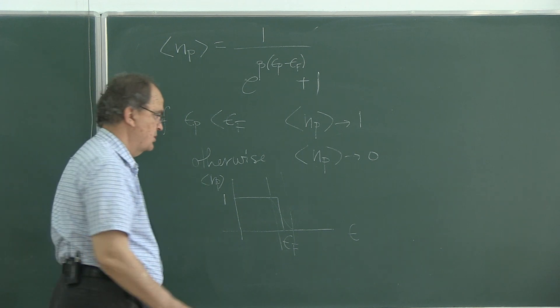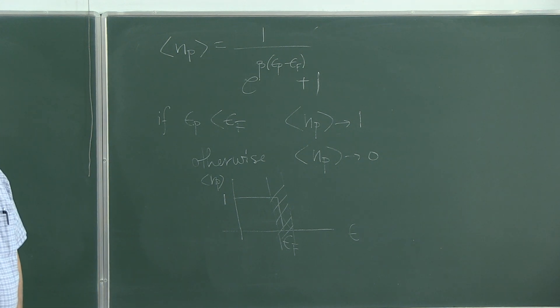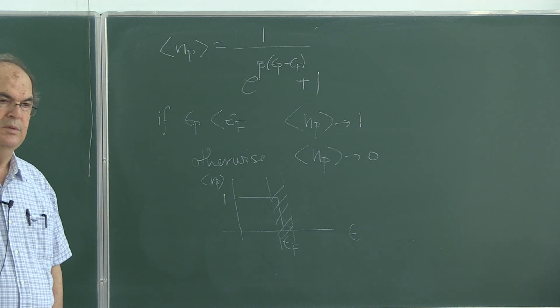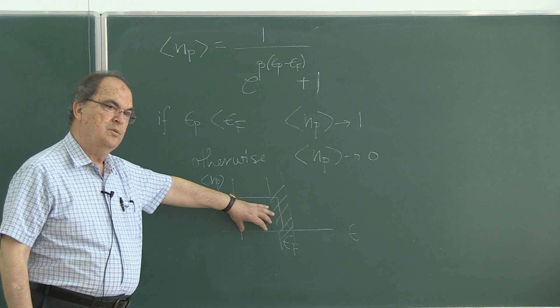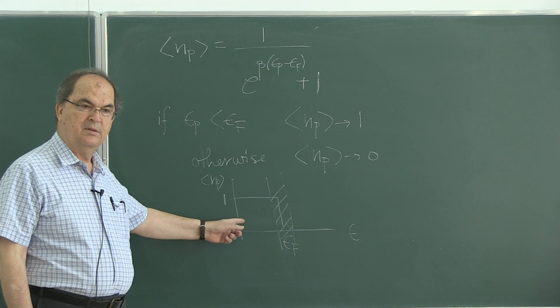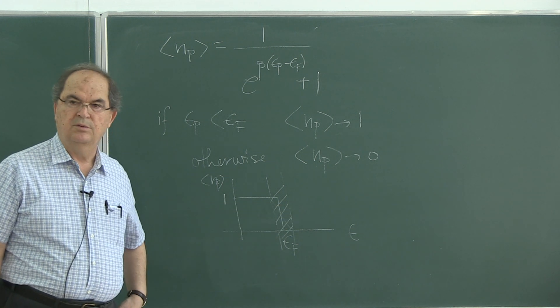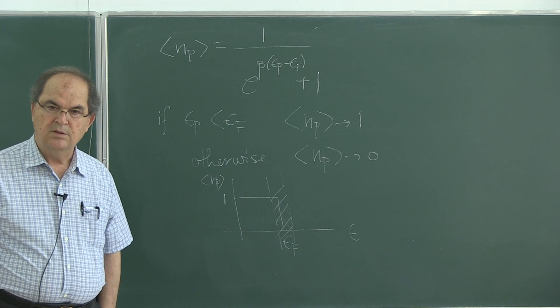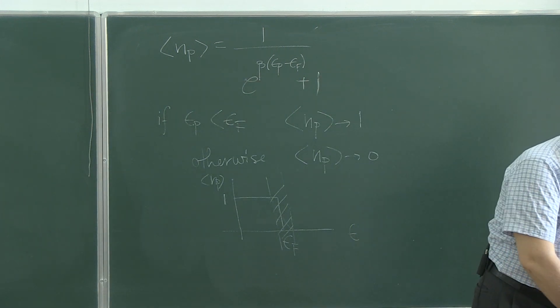So, only a very limited number of fermions around the Fermi level can respond to change in temperature, increase in temperature, isn't it? So, it is this region in which the particles, fermions, are able to go to empty states. The other particles cannot go to already filled states. For example, if you want to take a particle in a state like this, you have to give a huge energy to excite it to an empty state. Is that picture clear?